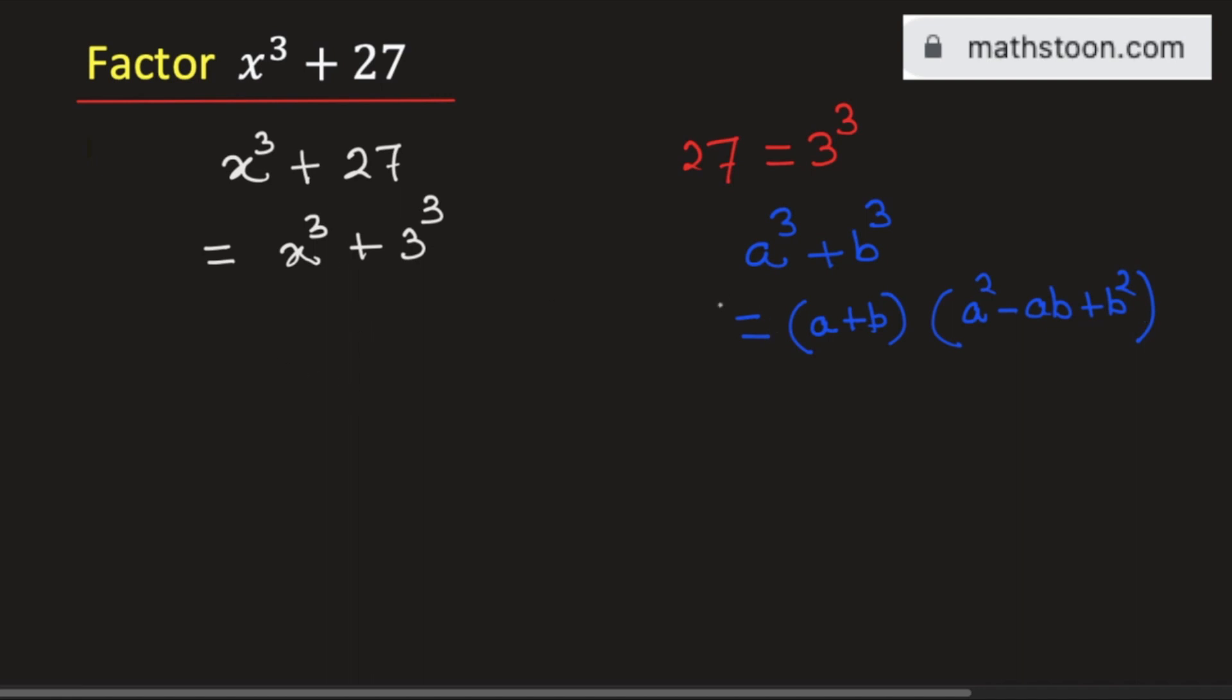So applying this formula here we get this is equal to x plus 3 times x square minus x times 3 plus 3 square. Now simplifying this we get x plus 3 times x square minus 3x plus 9.